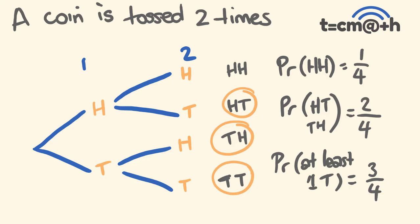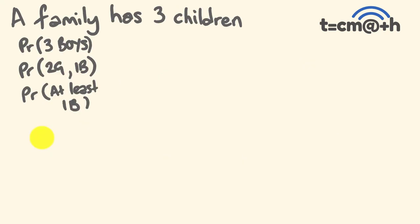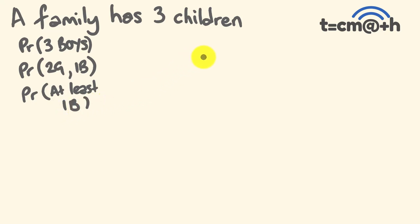Now I'm going to give you an example to try. A family has three children, boys or girls. What's the probability of getting three boys? What's the probability of getting two girls and one boy, not necessarily in that order? And what's the probability of getting at least one boy? First, use a tree diagram to set this up, list out your combinations, and then answer these questions.